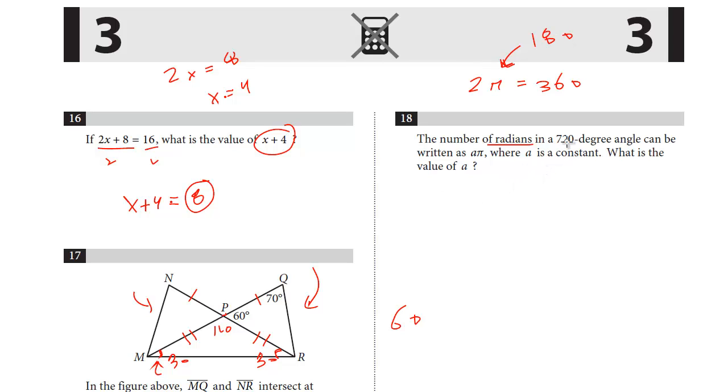And so this question, they're telling us it's 720. So if you know there's 2π radians in a circle, that means in 720 degrees, that's double a circle, it's going to be 4π, and a is a constant. We're asked to find a, so the answer here is 4.